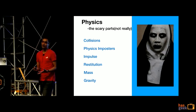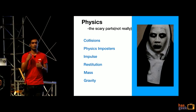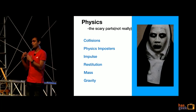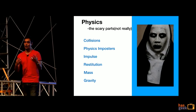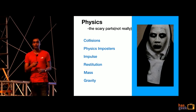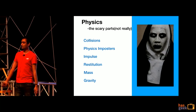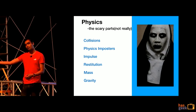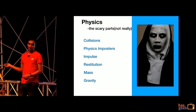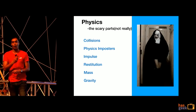Now comes the scary part: physics. With every game comes collisions, game engine impulse, mass, restitution, and every other term you might have feared in school. Implementing all of this by hand is just too much work, but this is how the JavaScript community works — you throw a problem at it and NPM will shout 'here are 64 solutions.' Thanks to the JavaScript community, nothing is really scary for us; our physics engine will take care of all of this.